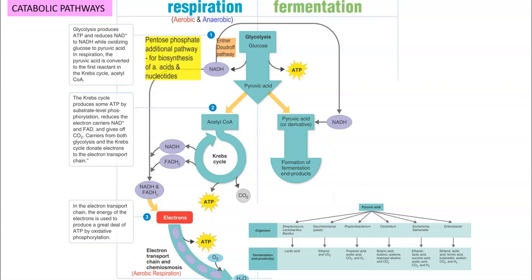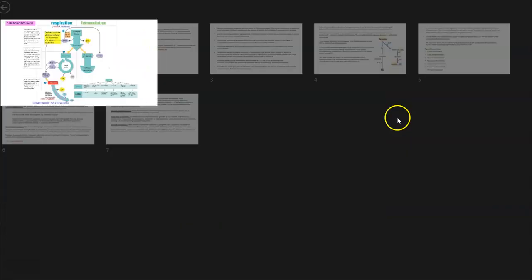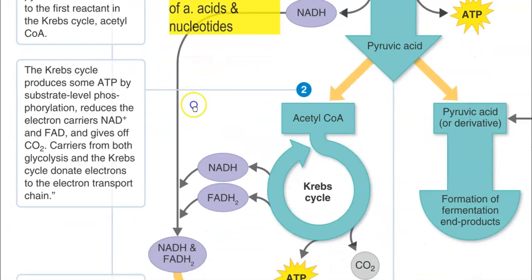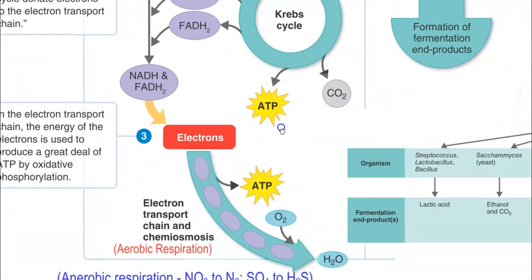From there, acetyl-CoA is formed, and then acetyl-CoA will be degraded by using the citric acid cycle or Krebs cycle. Through both these processes, you are getting a lot of reducing equivalents — that is, NADH or FADH2. These reduced equivalents are formed in large amounts and are further channeled into the electron transport chain.